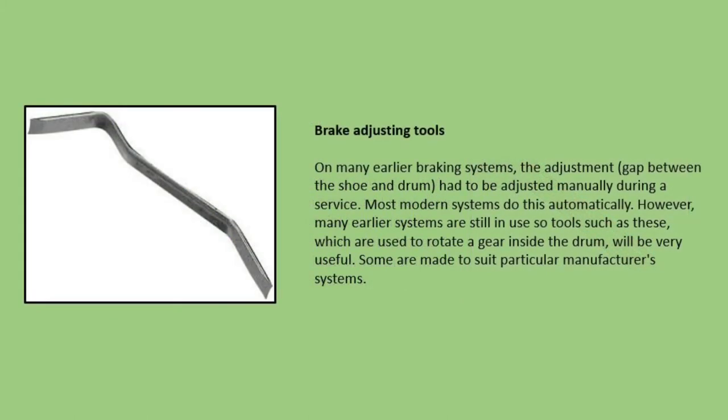Brake adjusting tools. On many earlier braking systems, the adjustment — the gap between the shoe and the drum — had to be adjusted manually during a service. This was necessary because over time the friction material on the brake shoes became thinner. Most modern systems do this automatically; however, many early systems are still in use, so tools suitable for rotating the gear inside the drum are used.